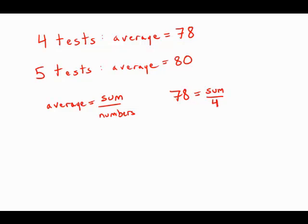I'm going to multiply both sides to get sum equals average times number, and in this form it's incredibly useful to us. If we multiply, we can find that those first four tests have a sum of four times 78.